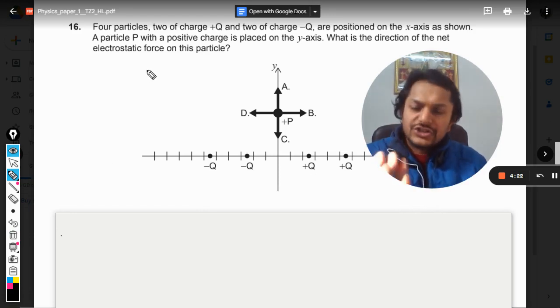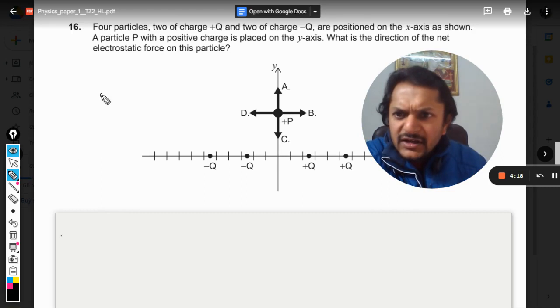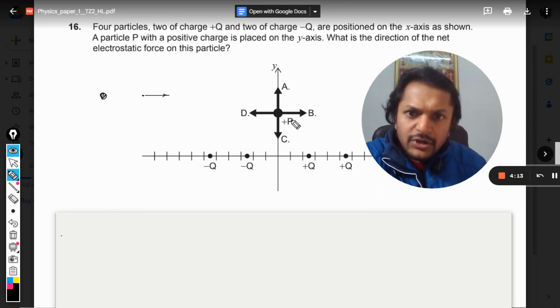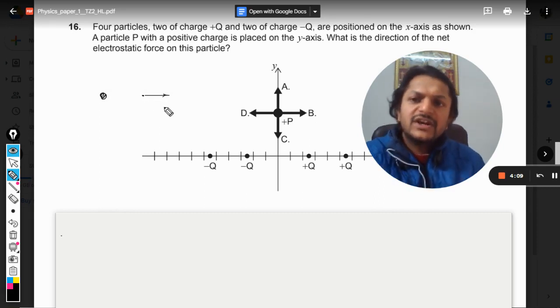As a matter of fact, we know that the electrostatic force or the electric field is always directed away from the positive charge because this is positive and this is positive. It will be away from the positive charge, and if it is a negative charge, it is towards the negative charge.